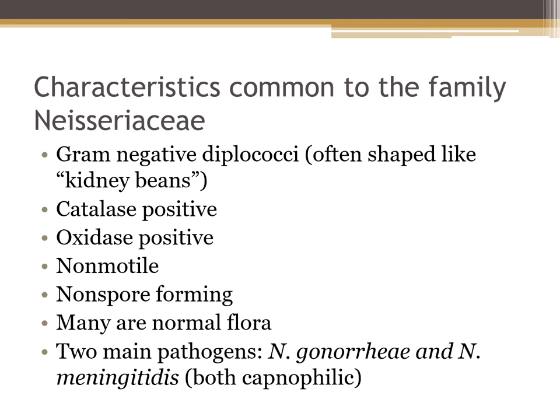Some of them can actually be gram-negative rods as well. Neisseria elongata and Neisseria weaveri are gram-negative rods, but all of the rest of the Neisseriaceae are gram-negative diplococci. They are catalase positive — and you probably recall from a couple units ago, Staphylococcus is catalase positive too.